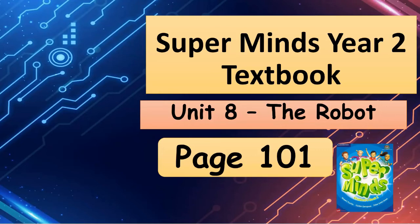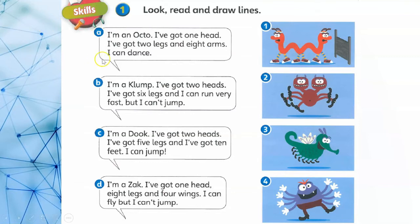Supermind Year 2 Textbook, Unit 8, The Robot, page 101. Look, read and draw lines.